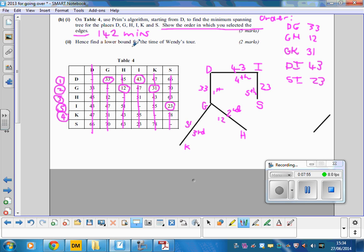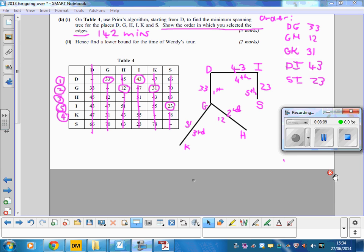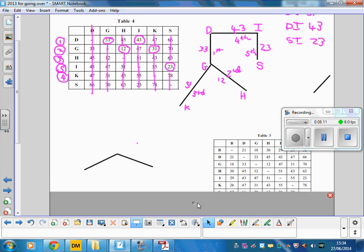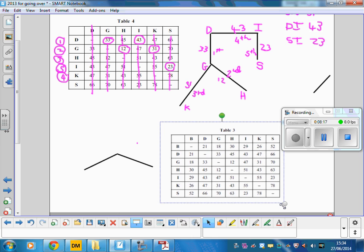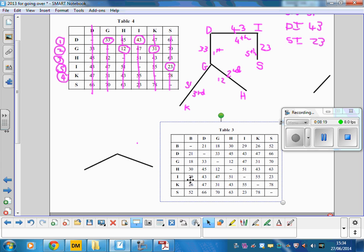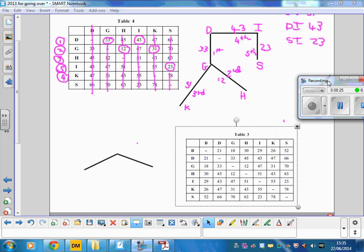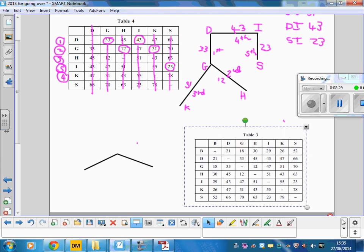Now notice it says hence find the lower bound. Usually when you do the lower bound algorithm, we're just told to use the lower bound algorithm, but there's a hence here. So what we need to do is we need to go back and look at the original table that we had when we were doing the nearest neighbor for the last part of the question. And you'll see here table three is a larger table than table four. And you'll see here table four, it's got an extra vertex in which they've got rid of. So usually of course, we would do that deleting the vertex ourselves, but they've done it for us. So we know that that's the one which we need to use to get the two shortest edges from it.